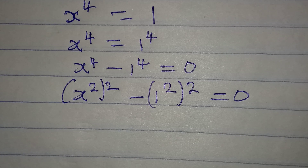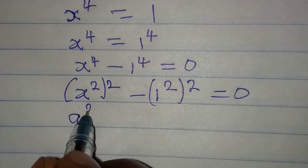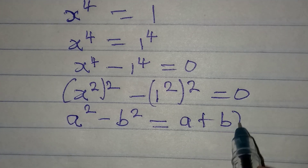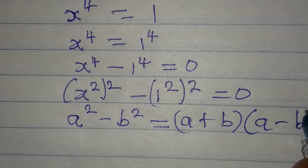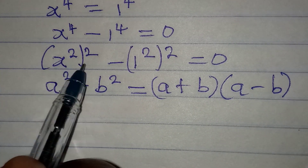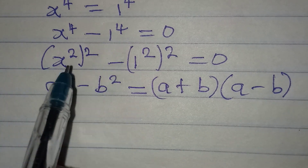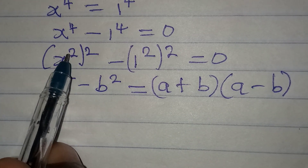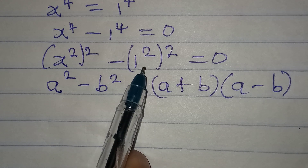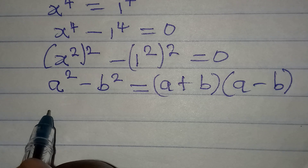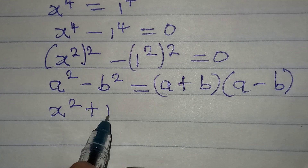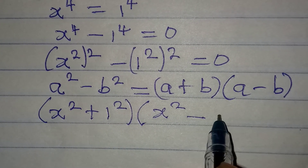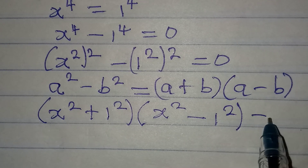Now we can apply the difference of two squares. If you have a squared minus b squared, it is the same thing as a plus b multiplied by a minus b. I will apply the same principle here, because we have x squared squared minus 1 squared squared. So my a is x squared and my b is 1 squared. In place of a plus b, I'll have x squared plus 1 squared, and in place of a minus b, we have x squared minus 1 squared, and this equals 0.